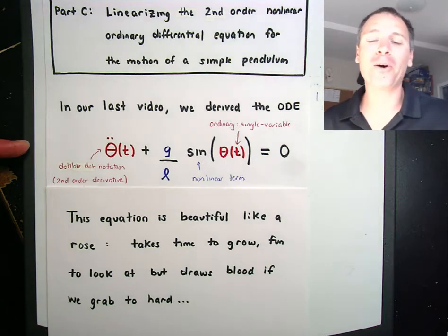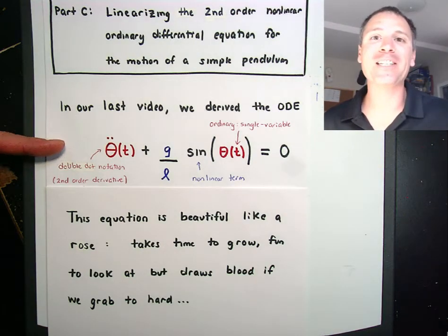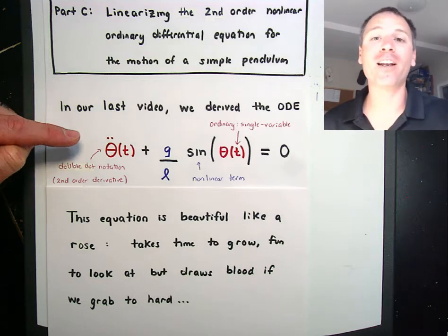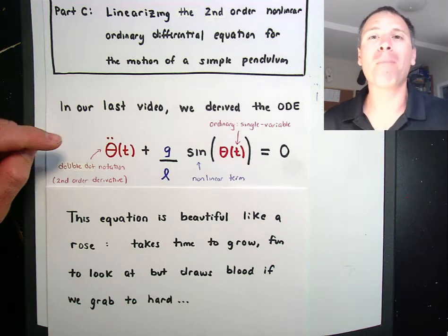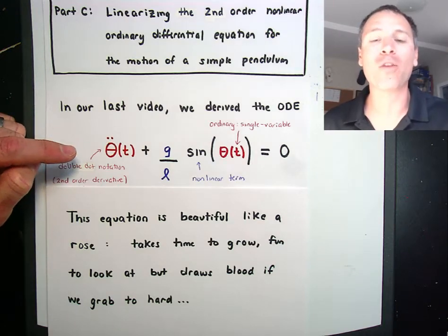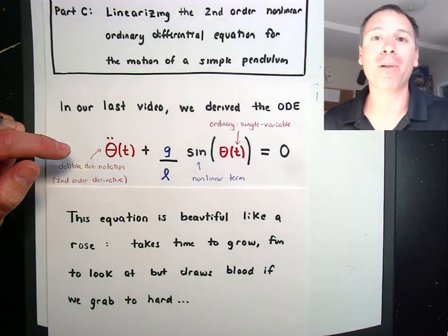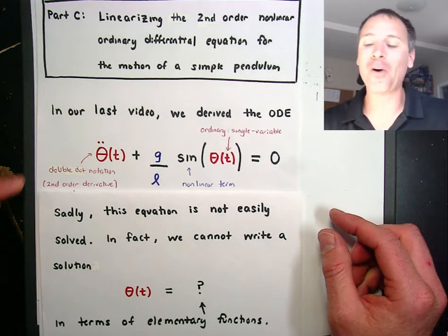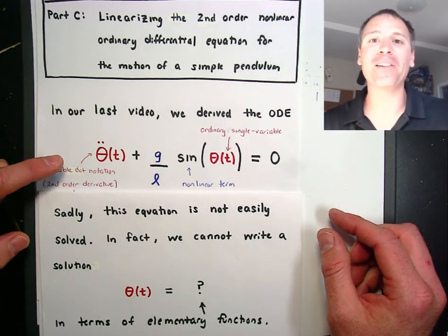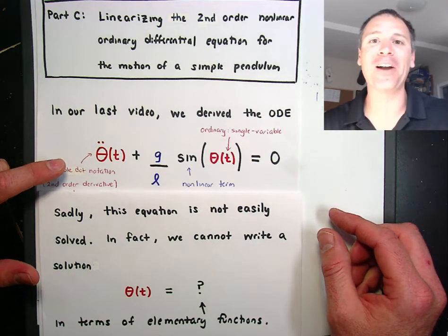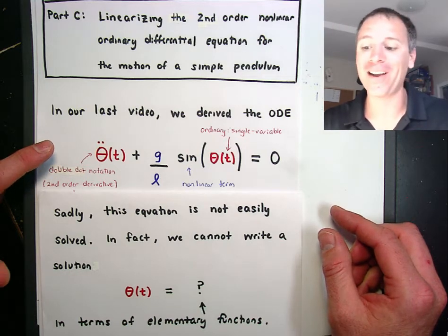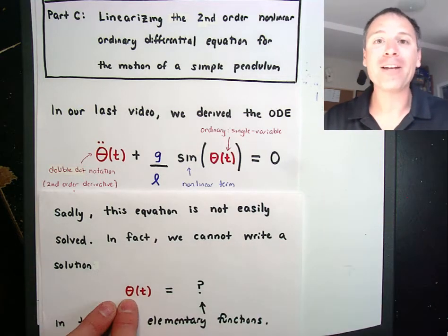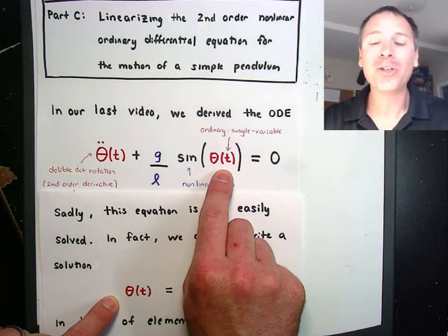This equation is beautiful like a rose — it takes a ton of time to grow, and when we look at it it's really beautiful, but if we grab it too hard in the wrong place it's going to draw blood. In fact, this is where we learn that all the work we do in calculus is nice in theory, but in practice it doesn't hold water. There is no elementary function solution to this equation.